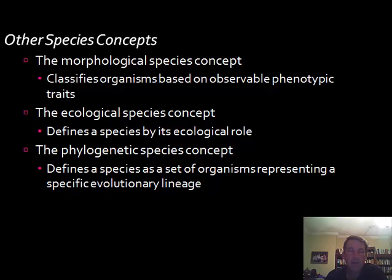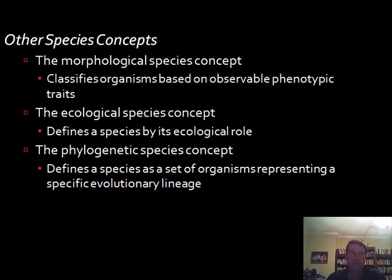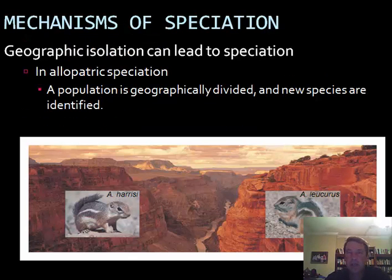There are instances when individuals have diverged away from each other within the same species group and are then considered two distinct species. That process is called speciation, and there are different types of speciation that we'll look at.